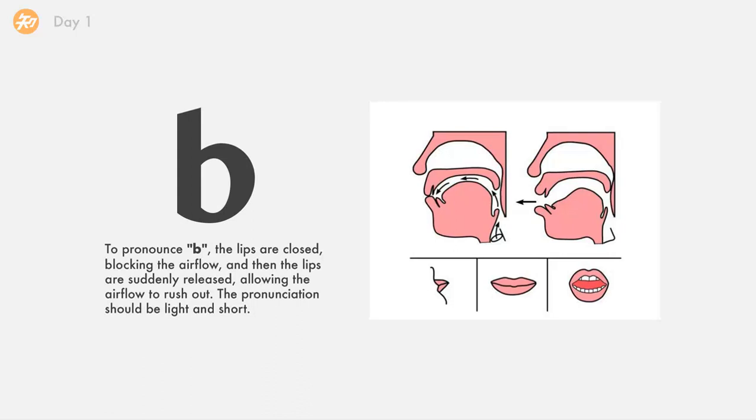The first one is p. To pronounce p, the lips are closed, blocking the airflow, and then the lips are suddenly released, allowing the airflow to rush out. The pronunciation should be light and short.